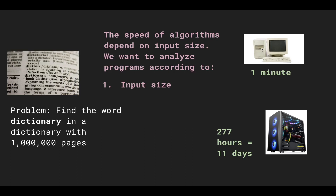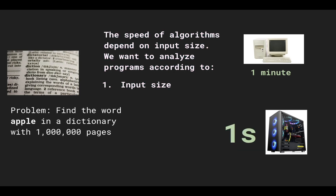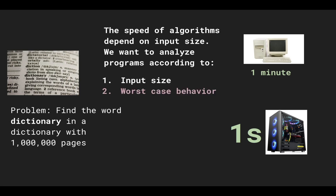So when we analyze algorithms, we want to analyze them according to input size. But what if the gaming computer gets really lucky and finds the word on the first page — for example, the problem changed to finding the word 'Apple'? In this case we still want to consider the slow computer to have a better algorithm, because we care what happens in the worst case.